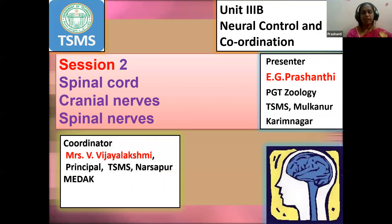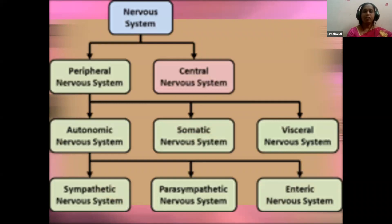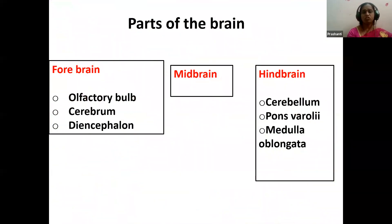Good morning, dear students. Today we shall continue with the second session — the spinal cord, cranial nerves and spinal nerves under the chapter neural control and coordination. Let us recall the first session. The nervous system comprises of peripheral nervous system and central nervous system. Central nervous system is divided into brain and spinal cord. Peripheral nervous system is further classified into autonomic, somatic and visceral nervous system. Autonomic is further divided into sympathetic, parasympathetic and enteric nervous system. We have learned about the major parts of the brain: the forebrain, midbrain and the hindbrain.